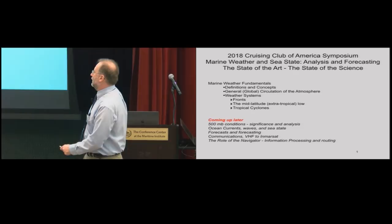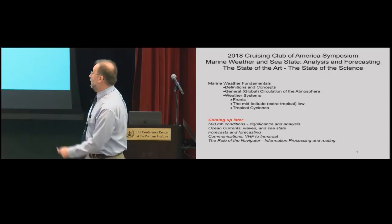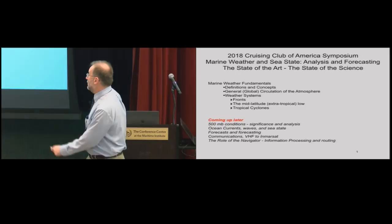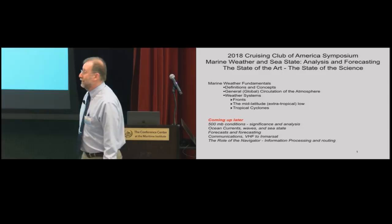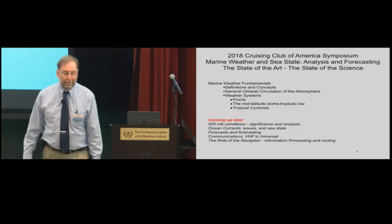I'll talk about the general circulation of the atmosphere, then some weather systems — not all of them, but ones that give us a basis for looking at charts. We'll cover fronts, the mid-latitude low, tropical cyclones, and synoptic systems. After me, Lee Chesno will discuss 500 millibar conditions, then back to Frank for ocean currents and waves. This afternoon there will be talks on forecasting by Joe Sinkiewicz and Ken Campbell, communications with Ralph and Jim, and a roundtable on how we put it all together.